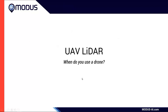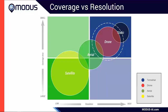UAV LiDAR — when do you really want to use a drone? There are lots of different platforms. The earliest use of this stuff was via satellite, whether for NASA, land exploration, or global mapping. It wasn't until the late 90s that aerial platforms started to come out, and then drones emerged. When deciding whether to use a drone, the first question is how much coverage area you can really cover. For a drone, we're limited first by regulations.